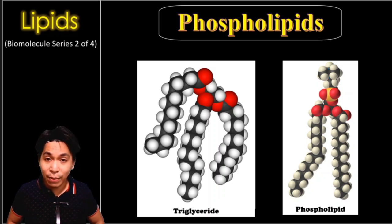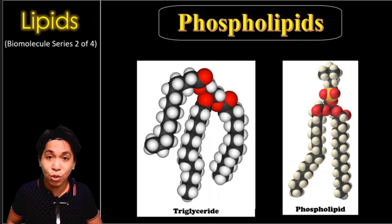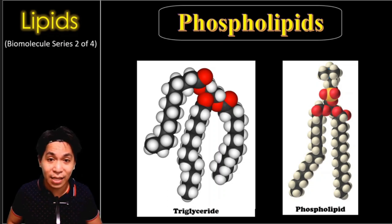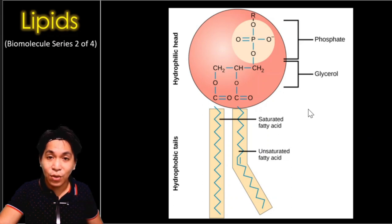The second type of lipids are the phospholipids. From the name itself, it is a lipid with the element phosphorus. If you observe the structures, you will see two differences from triglycerides. In triglycerides, there are three legs — the three fatty acids — while in phospholipids, you will only see two legs, meaning phospholipids have only two fatty acids. One is a saturated and the other is an unsaturated fatty acid.